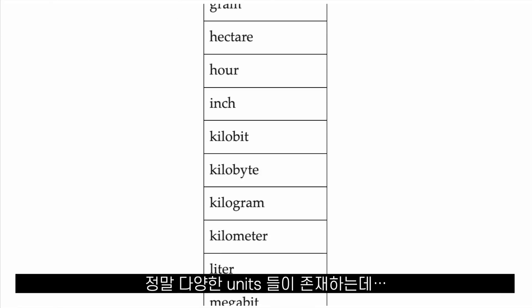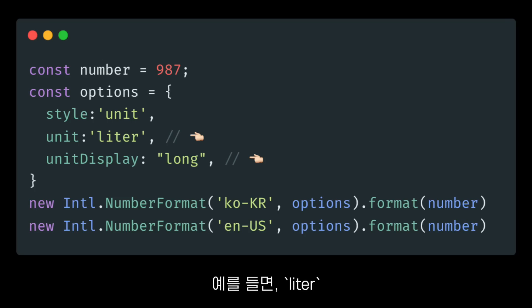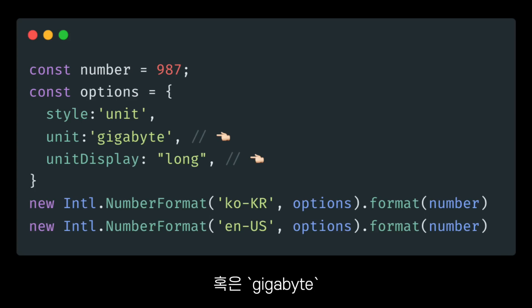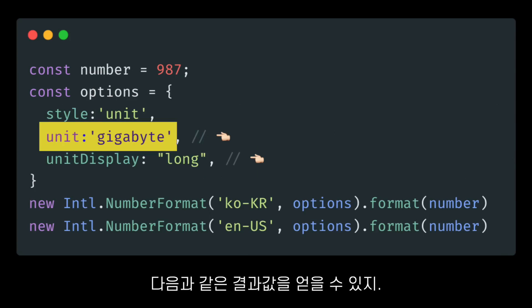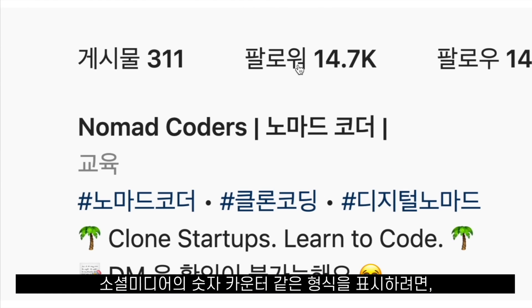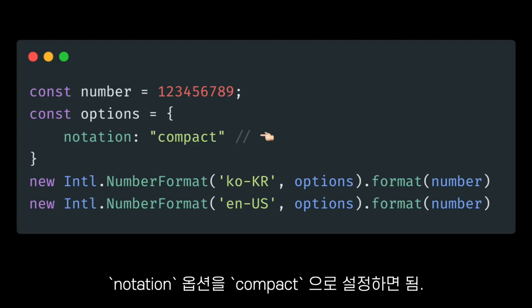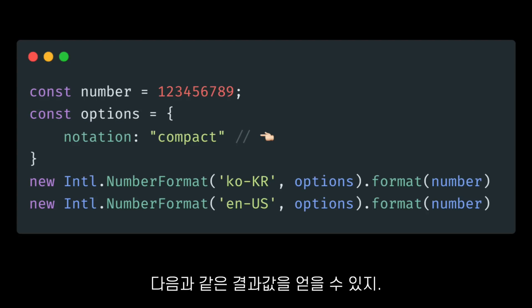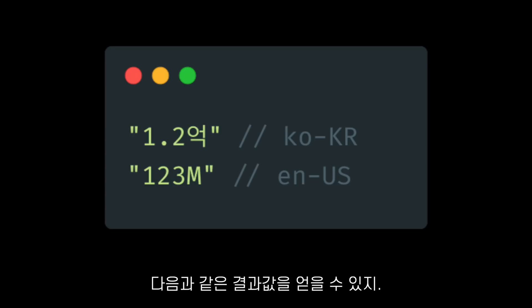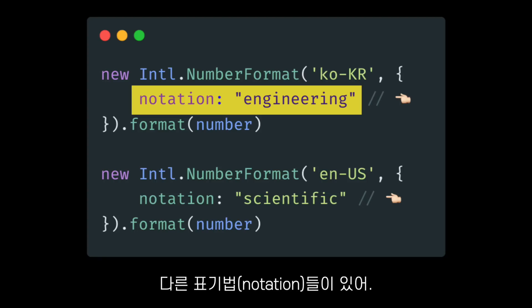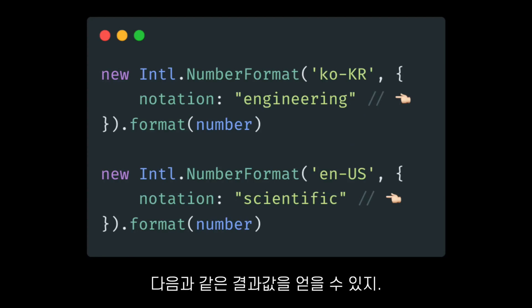There are a lot of units — for example, liter, giving us an output like this, or gigabyte, that looks like this. To format numbers like the counters we see in social media, all we have to do is set the notation option to compact, and that will give us something like this. We also have other types of notations, like scientific notation or engineering notation, that look like this.